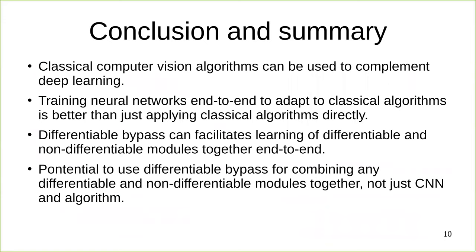In conclusion, classical computer vision algorithms can be used to complement deep learning. Training neural networks end-to-end to adapt to classical algorithms is better than just applying classical algorithms directly. The differentiable bypass can facilitate joint learning of differentiable and non-differentiable modules end-to-end. There is also potential to apply this differentiable bypass concept to any kind of module, not just CNN and classical algorithms.